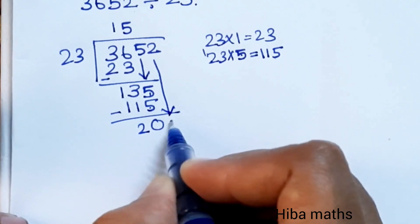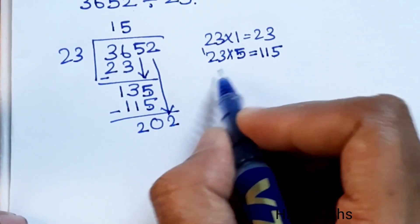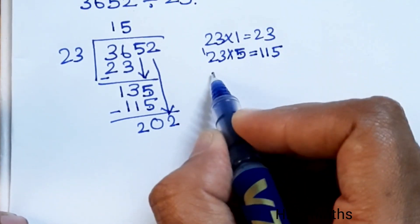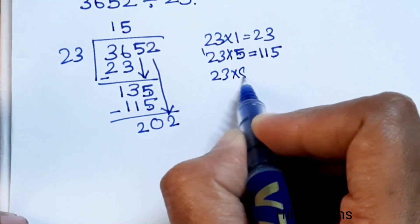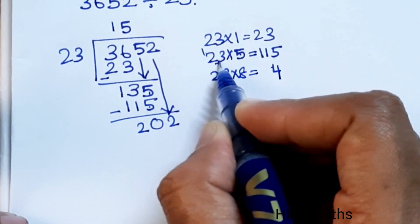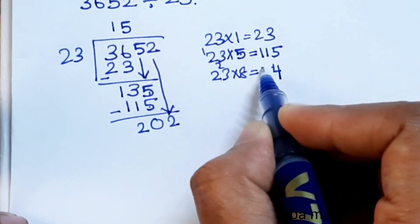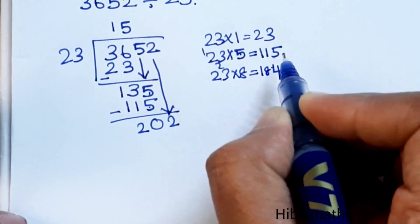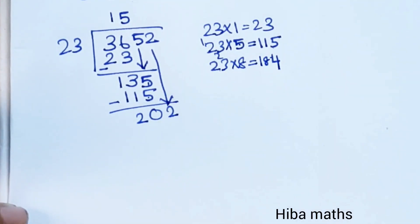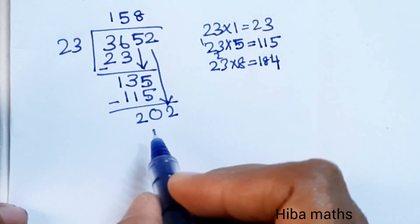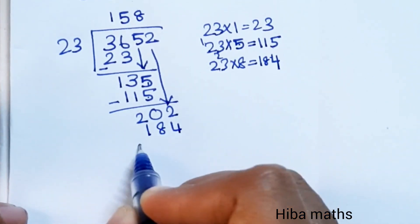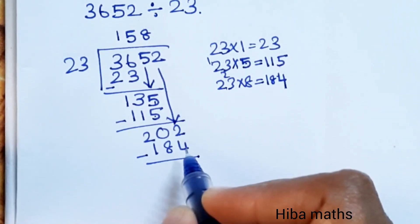Next, 23 into 202. We try 8: 8 times 3 is 24, carry 2. 8 times 2 is 16, plus 2 is 18. So 8 times 23 is 184. 202 minus 184 is 18.